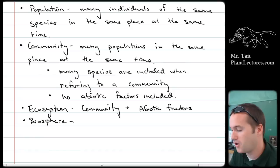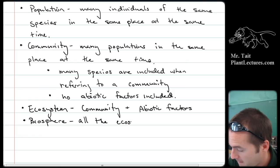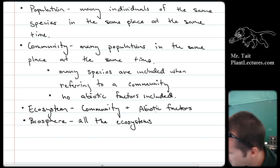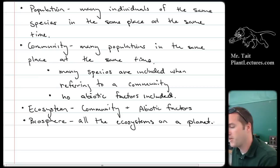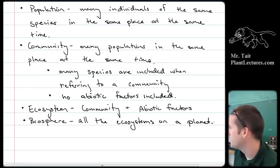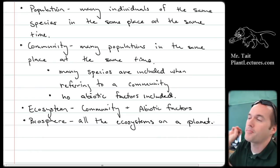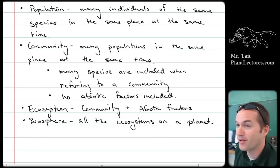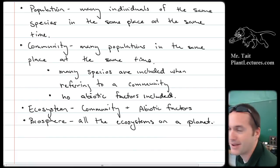The last level is called the biosphere — all the ecosystems on the planet. Right now Earth is the only biosphere we know of, since it's the only planet with living things on it. The term 'biosphere' was coined so we'd be prepared for the day we find another planet with life.